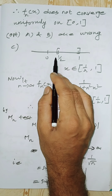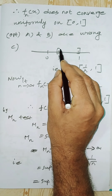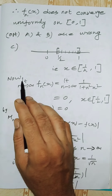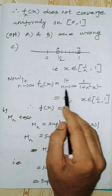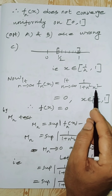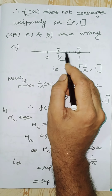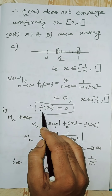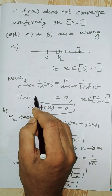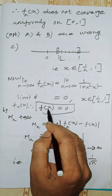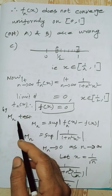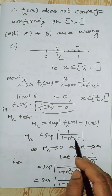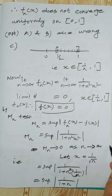Next, take option C: the closed interval [1/2, 1], where x values range from 1/2 to 1 inclusive. Following the same steps, the limit as n tends to infinity of fn(x) equals the limit of 1 divided by (1 plus n squared x squared), and for x belonging to [1/2,1] this limit approaches 0. So f(x) equals 0 on this interval.